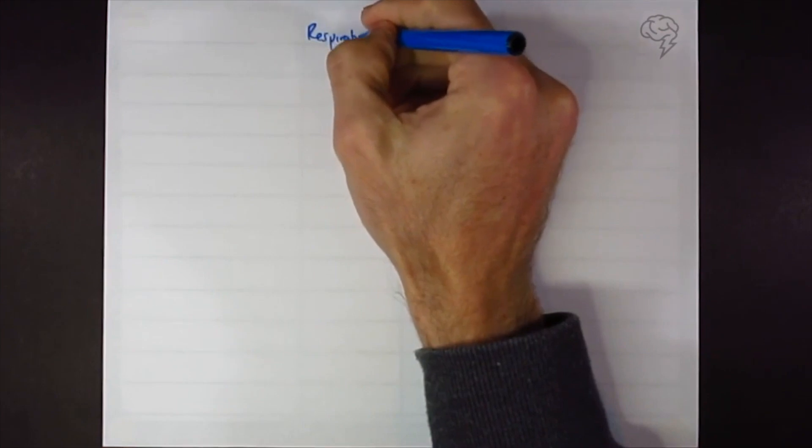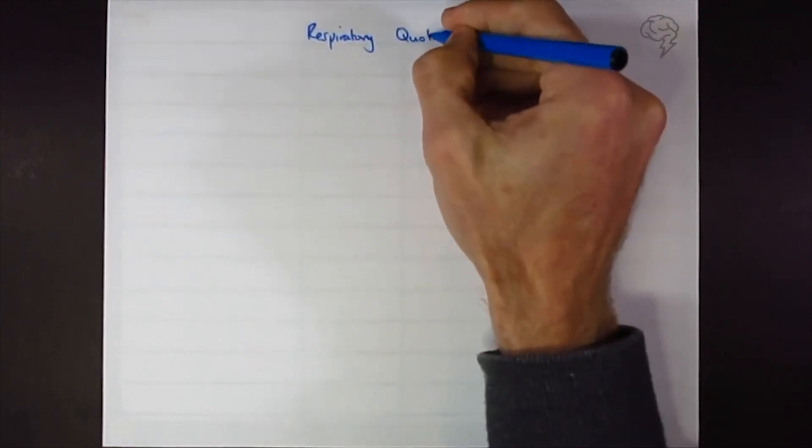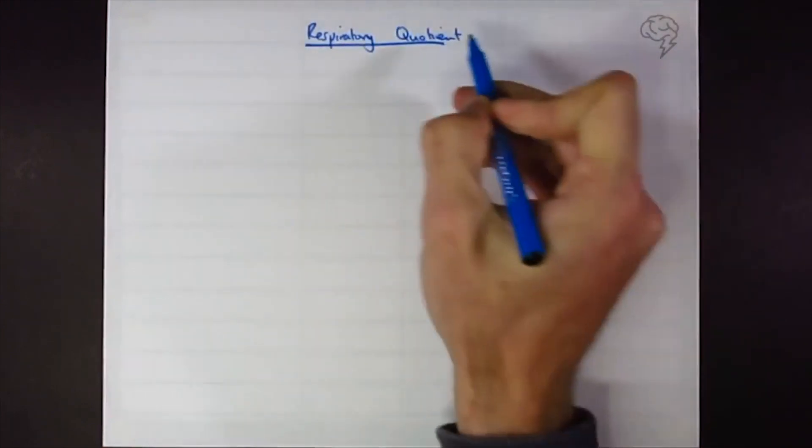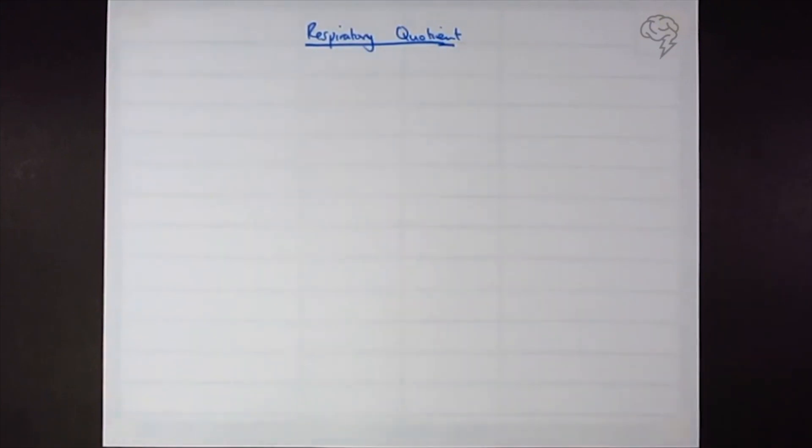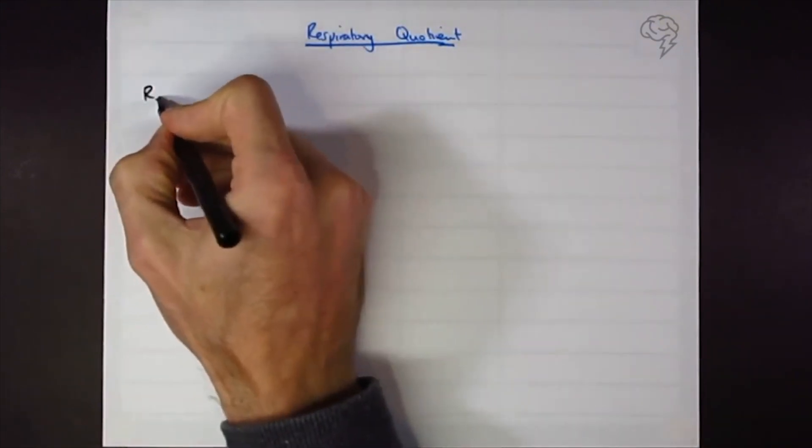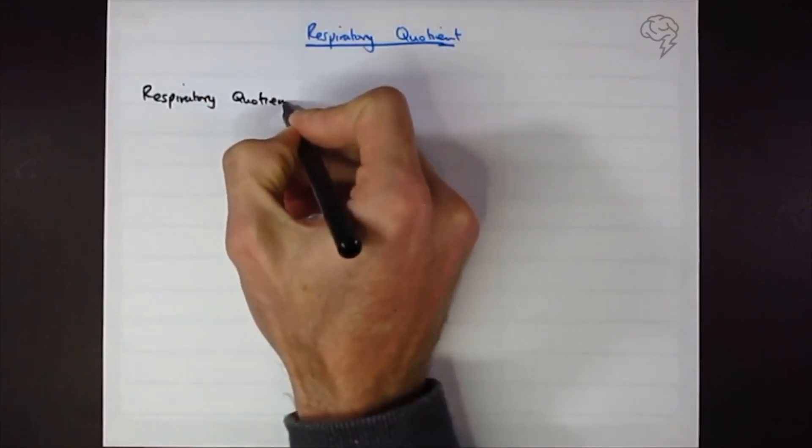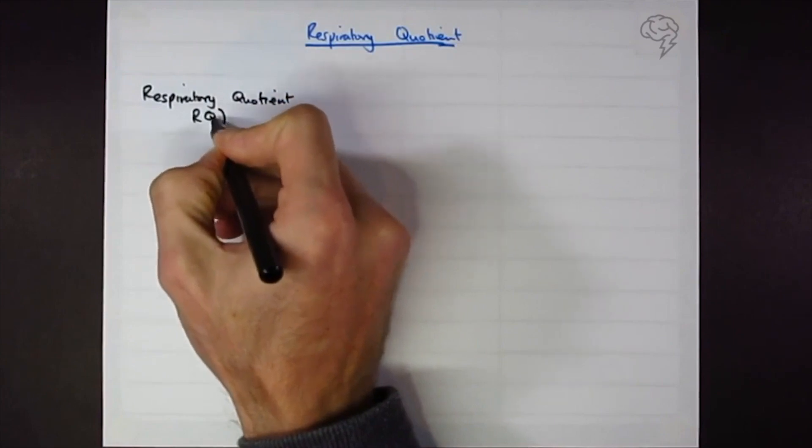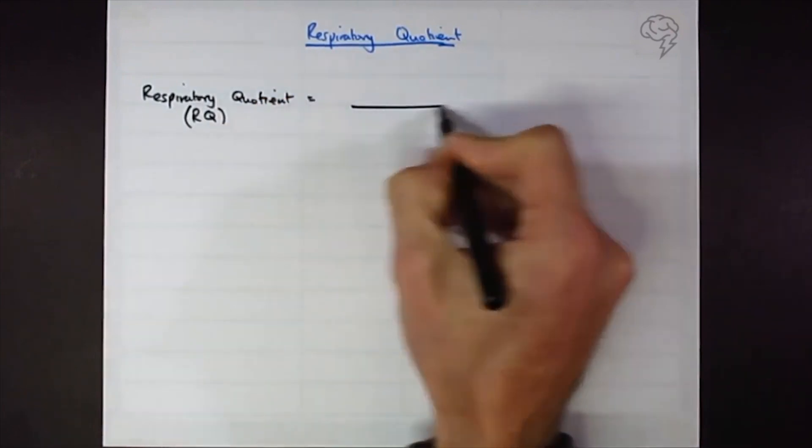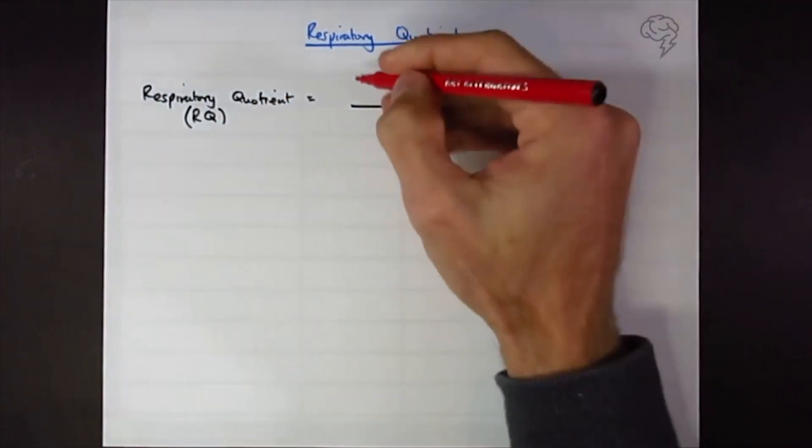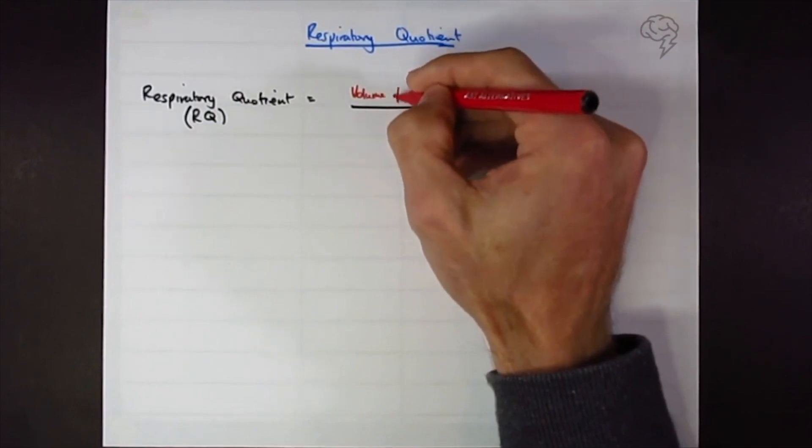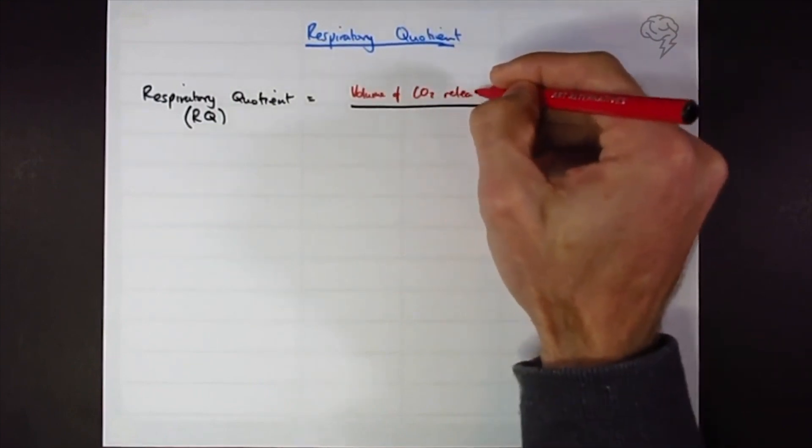Respiratory quotient, generally known as RQ. We're going to look at what it is and how we use it. Respiratory quotient is the volume of carbon dioxide released divided by the volume of oxygen consumed.